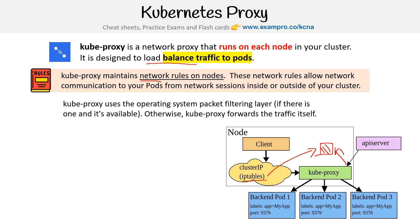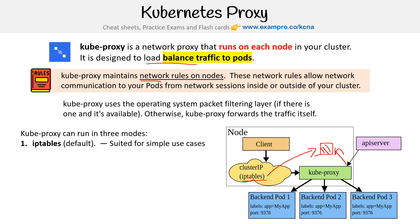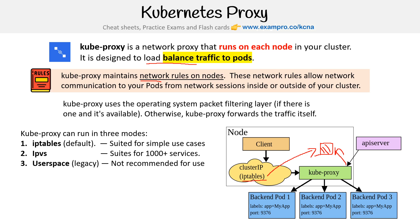Kube proxy uses the operating system packet filter layer if there is one and it's available, otherwise kube proxy forwards the traffic itself. Kube proxy runs in three modes: IP tables, which is the default suited for most use cases; IPVS, which is probably going to be the future default because it's so good — suited for thousands of plus services, but it's fine for simple use cases as well; and user space, which is legacy and not recommended for use.